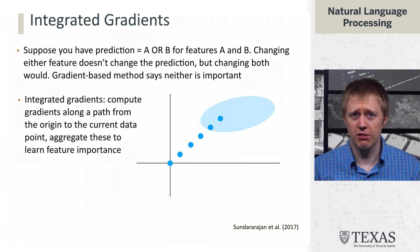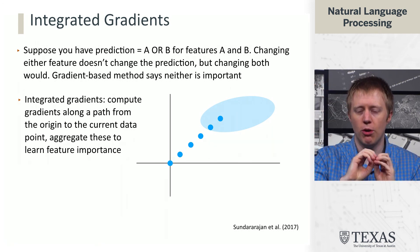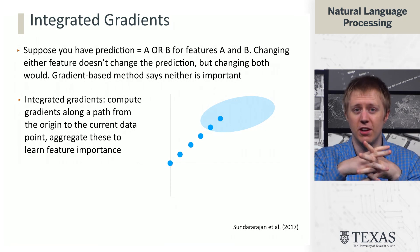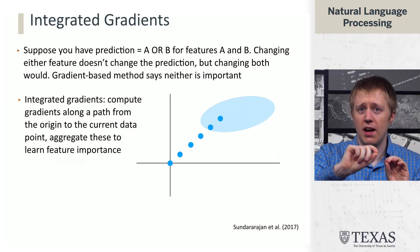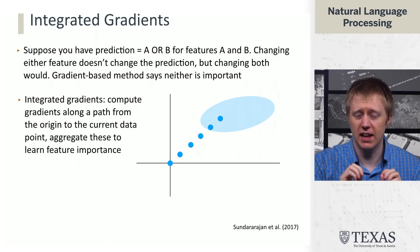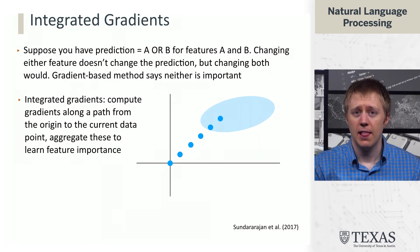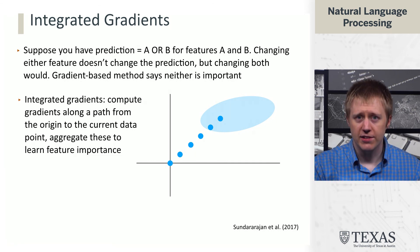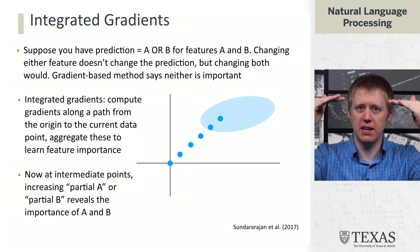So the idea behind integrated gradients is we think about a bunch of points along a path from the origin, basically some neutral sentence that just has like zero word vectors in it, up to our actual sentence. And we incrementally make the sentence look more like the real sentence along this path. And we do the same kind of gradient-based trick everywhere along the way.